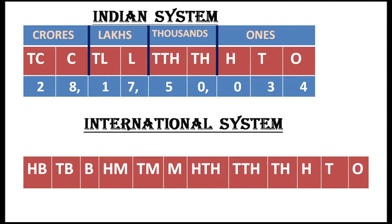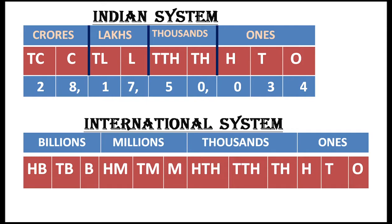In the ones period there are three places: ones, tens, hundreds. In the thousands period: thousands, ten thousands, and hundred thousands. In the millions period: million, ten million, and hundred million. And in the billions period: billion, ten billion, and hundred billion.